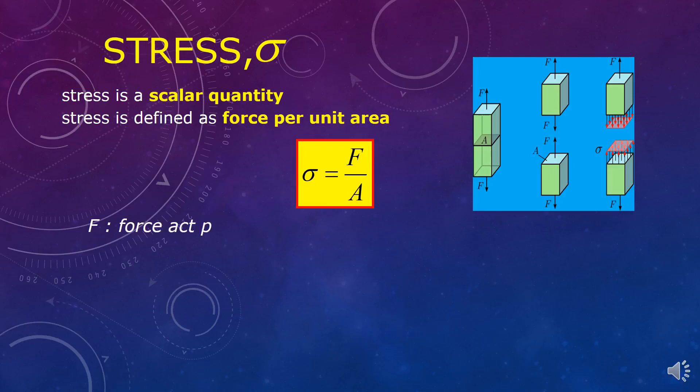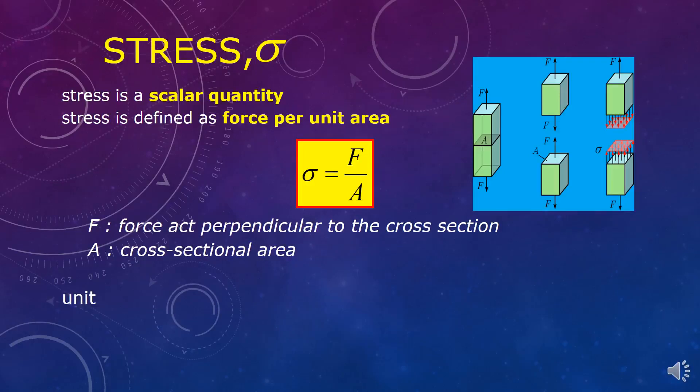F stands for force acting perpendicular to the cross-section, A is cross-sectional area. The unit for stress is kilogram per meter per second square, Newton per meter square, or Pascal.